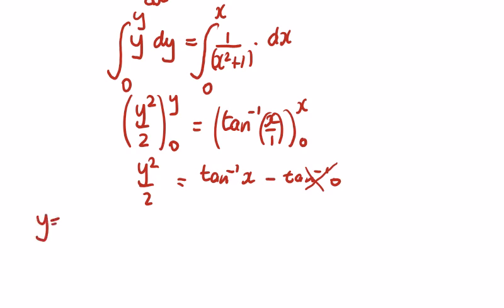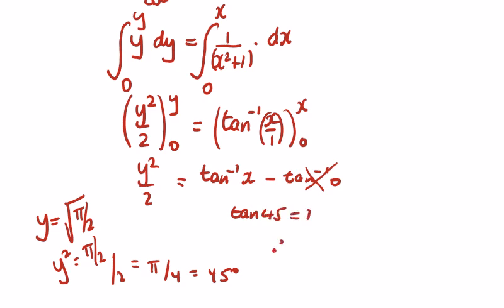We're told that y is equal to the square root of pi over 2. So if we square that, y squared is equal to pi over 2, and if we divide that by 2, we get pi over 4, which is 45 degrees. So we're going to get the inverse tan, or the tan of 45 is equal to 1. Therefore, x is equal to 1.